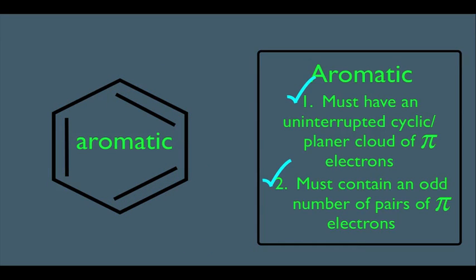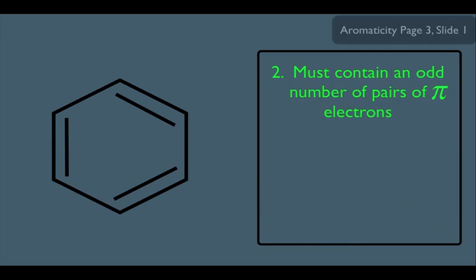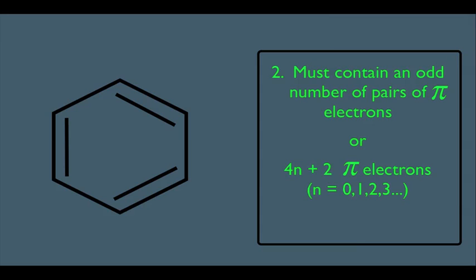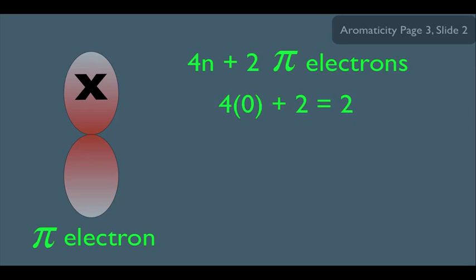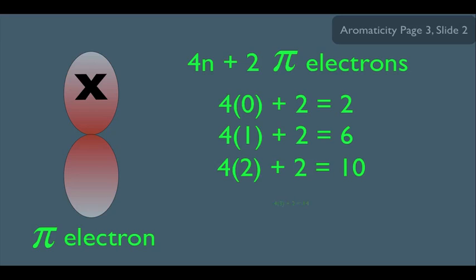However, there's an alternative to the second criteria that some textbooks or professors use. The alternative criterion two is that a molecule has 4n + 2 pi electrons, where n equals any integer: 0, 1, 2, 3, 4, and so on. This is essentially a formula. Plugging in 0 for n gives 2; plugging in 1 gives 6; plugging in 2 gives 10; and plugging in 3 gives 14, and you can keep going.